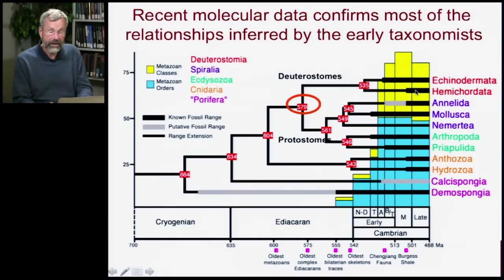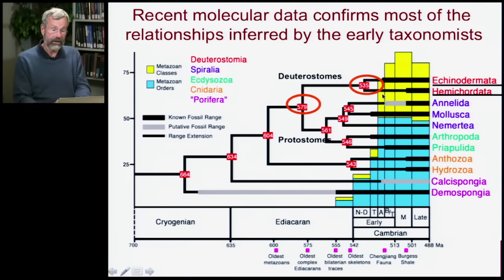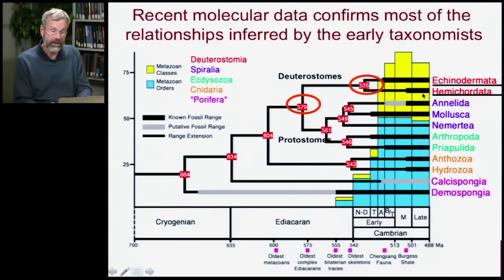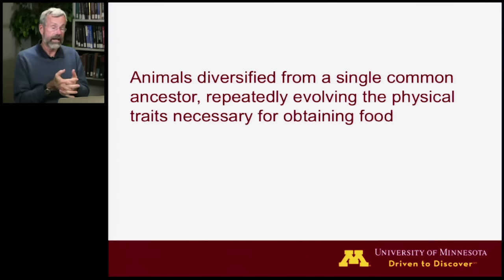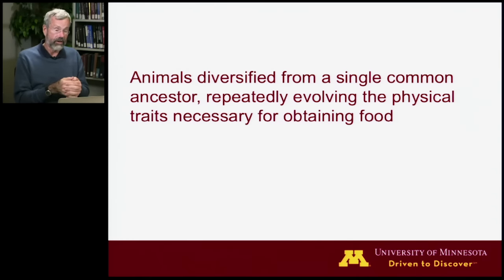All annelids, mollusks, and other protostomes are very different from the deuterostomes — the starfishes, chordates, and ultimately the vertebrates. We are more closely related to starfishes than to clams and bugs. Our most recent common ancestor from the chordate lineage is with the echinoderms. To summarize: it is very clear that all animals diversified from a single common ancestor, and they repeatedly evolved the necessary physical traits for obtaining food.